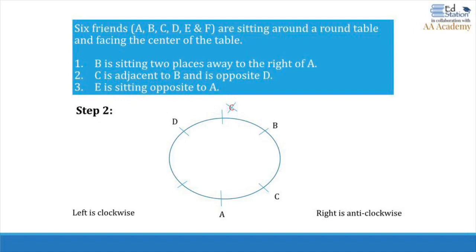B has two chairs beside him — one to the right and one to the left. If C were to the right of B, then 'and' refers to C, meaning C should be opposite, but opposite to B's right neighbor is A, which is not possible. Hence C must be to the left of B. Once C's position is fixed, C is opposite to D, so exactly opposite to C is D's position. Then the last condition says E is sitting opposite to A, so opposite A is E. The one chair left is occupied by F, completing the arrangement.